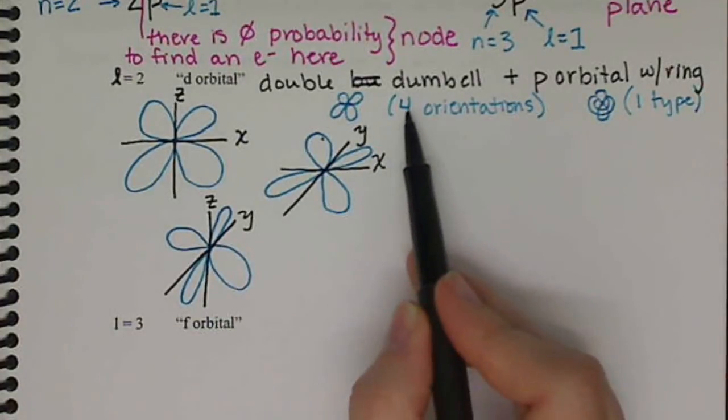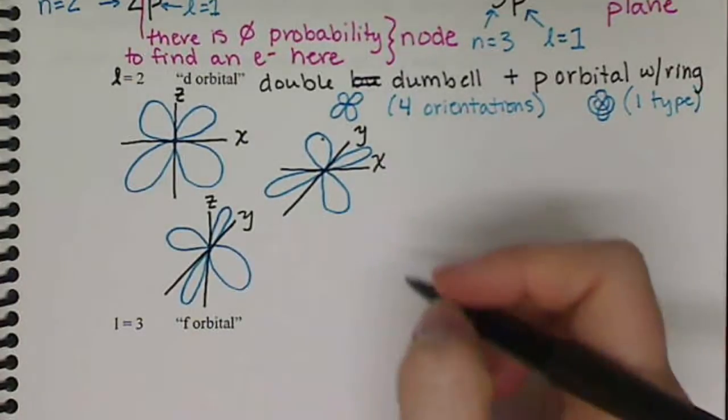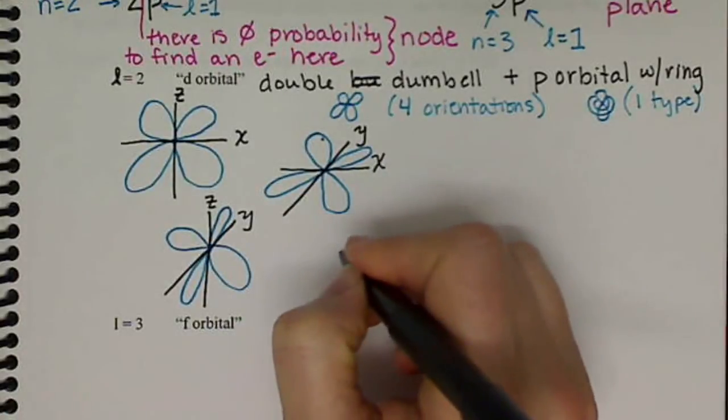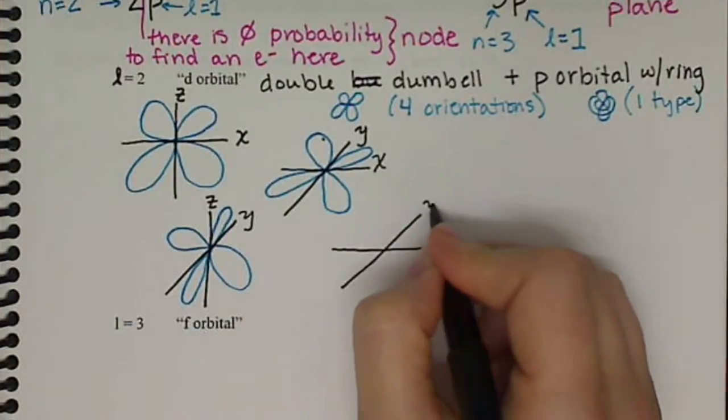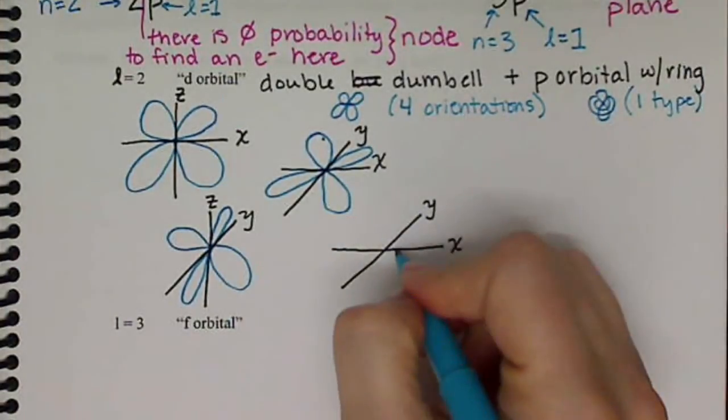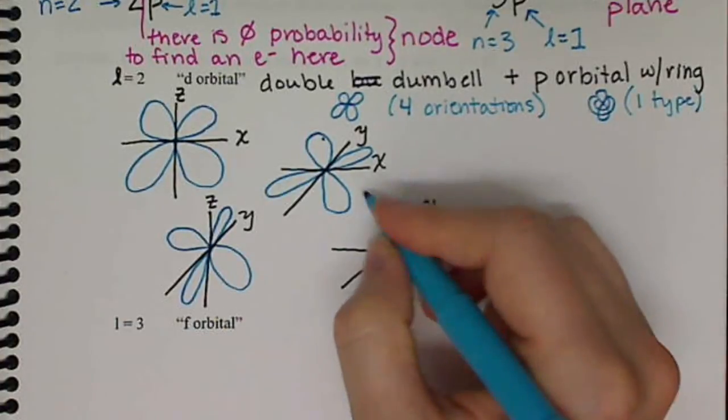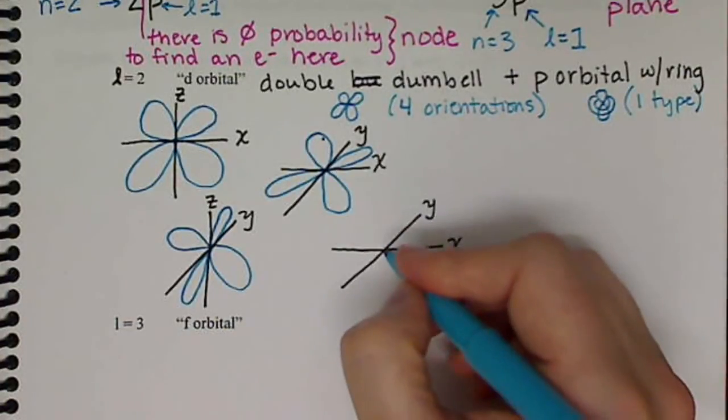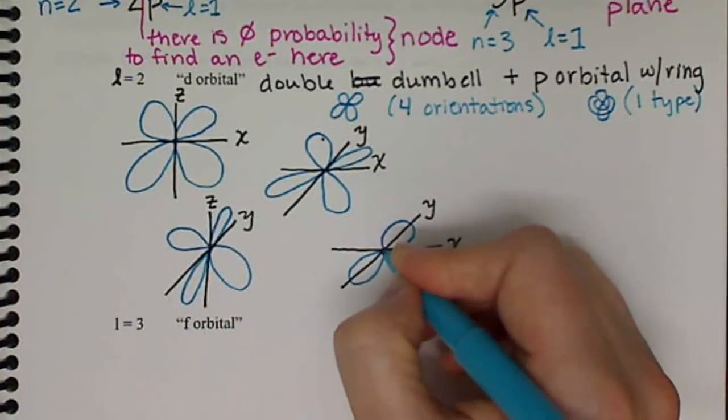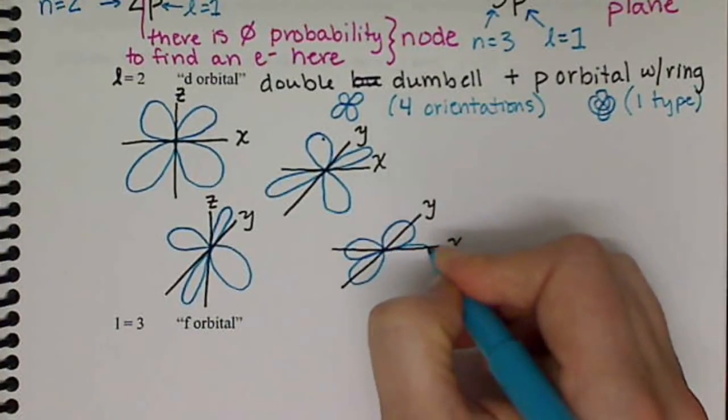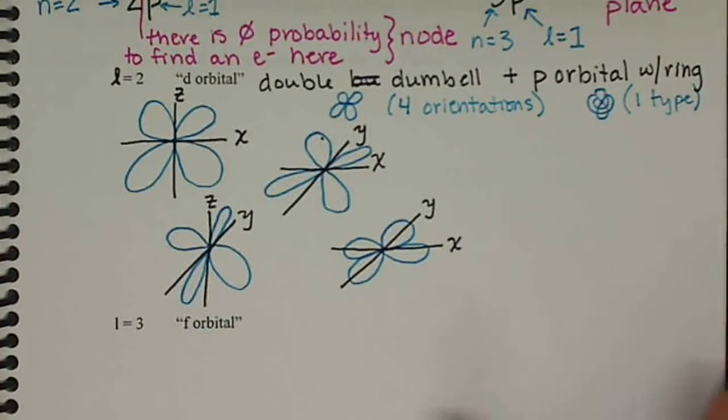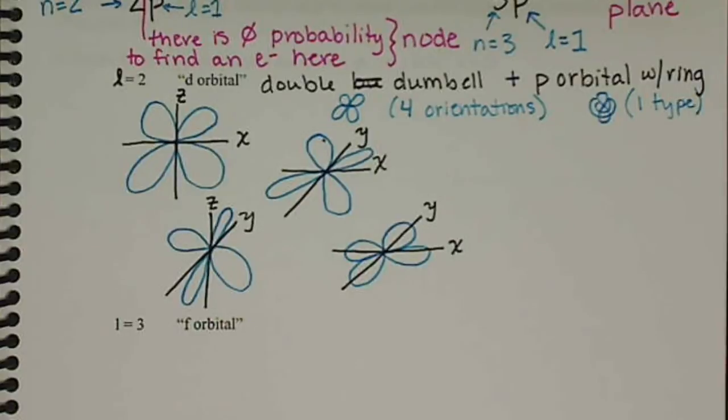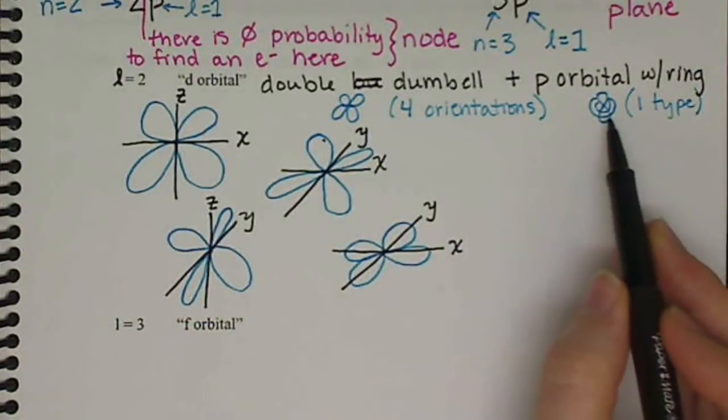Our fourth orientation of this double dumbbell type happens between the x and the y-axis. And rather than being in between the axes like it is here, it will actually be on the axes themselves.